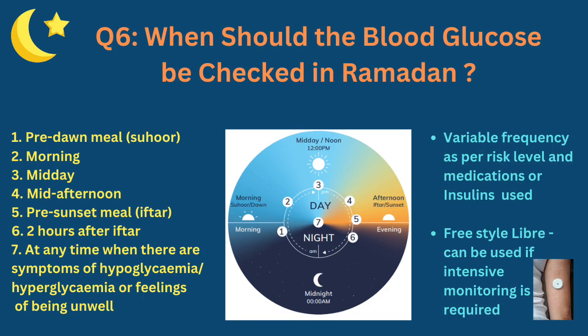When should blood glucose be checked in Ramadan? There are seven recommended times: before sahur, around 10 AM, midday around 12 noon, mid-afternoon around 2 to 3 PM, just before iftar, two hours after iftar, and any time when there are symptoms of hypo or hyperglycemia or if you are not feeling well. The frequency varies by risk level and medication type. Those using insulin or medications that can cause hypoglycemia should monitor more frequently, and can use a FreeStyle Libre — a non-invasive way to measure blood glucose many times per day.